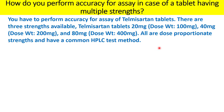From this example, you have Telmisartan tablets as a product to perform the accuracy study. The strengths are 20, 40, and 80 mg — a multiple dose formulation. Looking at the dosage weight per tablet across all strengths, you can find they are dose-proportionate: 20 mg at 100 mg tablet weight, 40 mg at 200 mg, and 80 mg at 400 mg. All are dose-proportionate formulations analysed using a common HPLC test procedure.